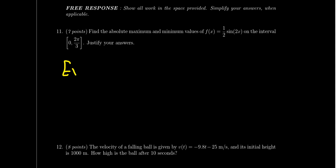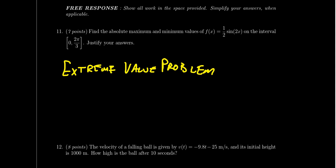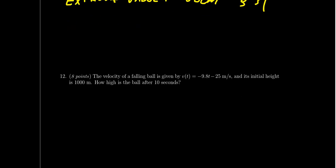Question number 11 is worth 7 points and presents an extreme value problem. The extreme value theorem tells us that a continuous function on a closed interval has an absolute maximum and an absolute minimum. You need to identify what those absolute extrema are — they will exist and you need to find them.